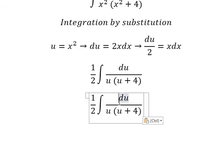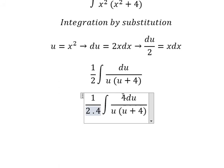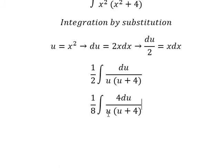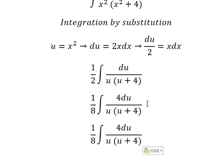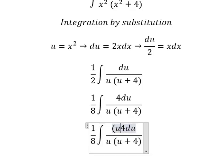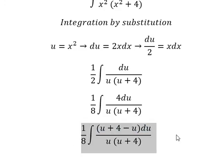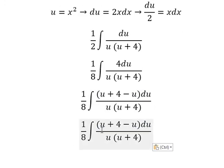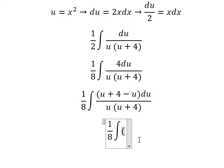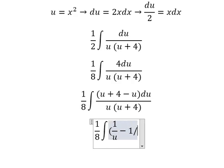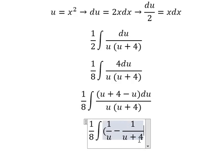Now I will put number 4 in here, and later we need to divide by number 4. So 2 with number 4 gives 1 over 8. Then we add u and minus u: u plus 4 divided by u plus 4, and u divided by u. In this situation we have 1 over u minus 1 over u plus 4, du.